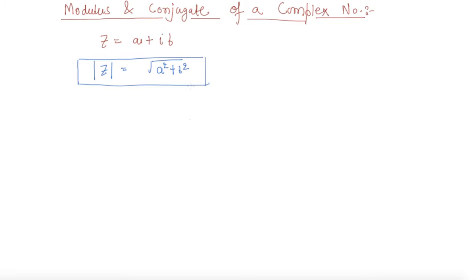And the conjugate of a complex number is denoted by z bar, and it equals a minus iota times b. Instead of plus, there is only change of minus. So let's discuss with one example what is the meaning of modulus and what is the meaning of conjugate.